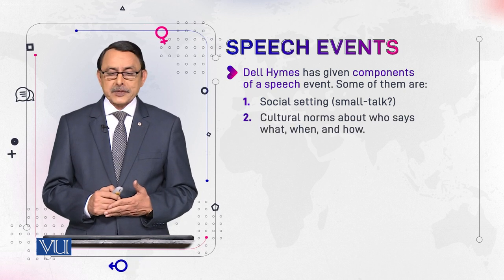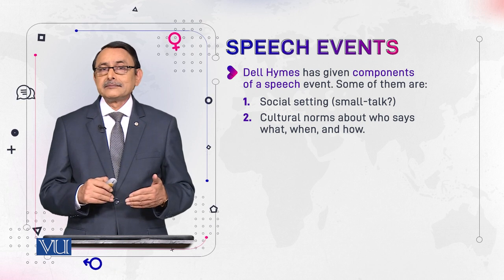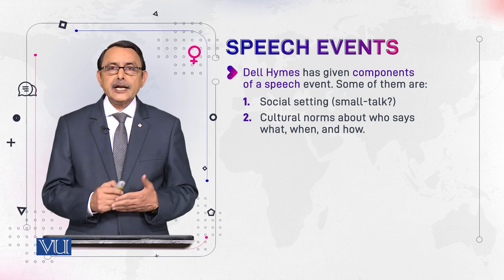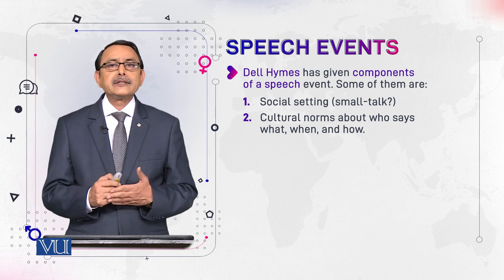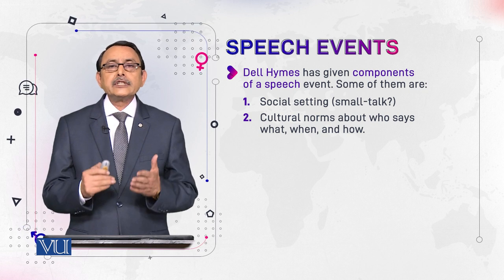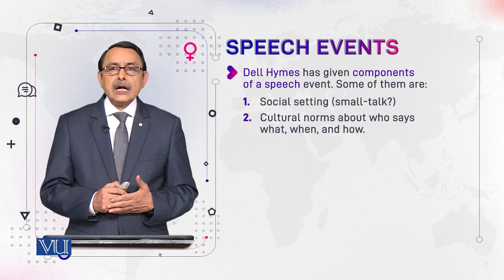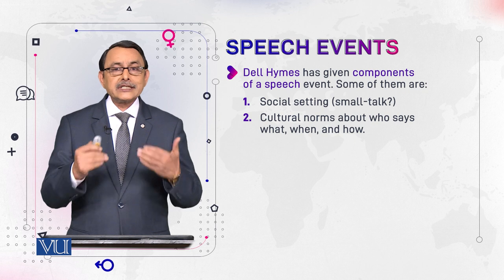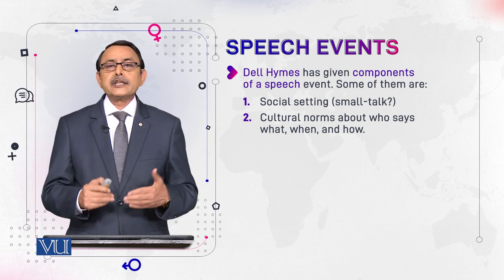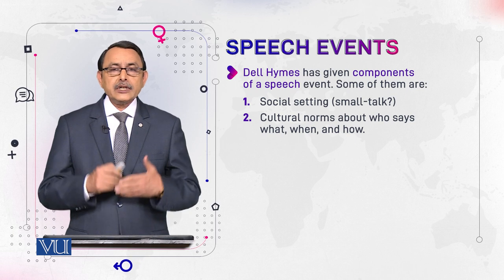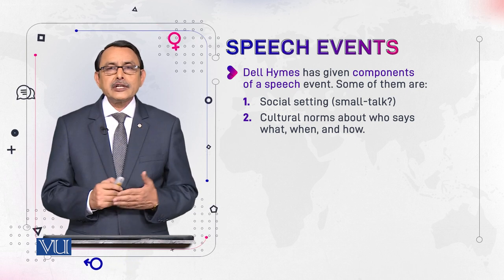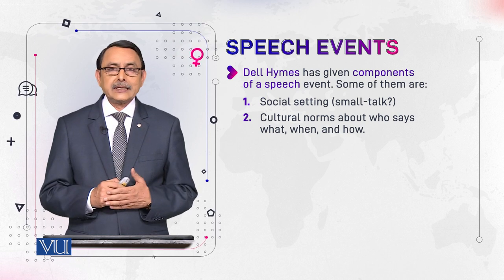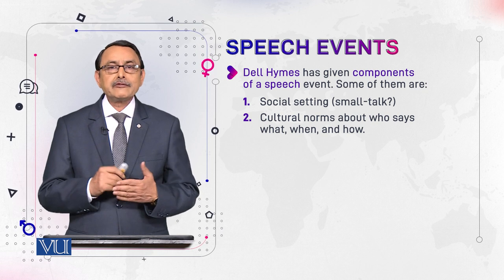The second component is cultural norms about who says what, when, and where. Context means the time, the place, and the participants involved in a situation of talk — and who says what and how. This is determined by the culture. When you are talking in the classroom with your teacher, your style of talking would be very different from your talk with your classmates and intimate friends. This is what we mean by cultural norms.